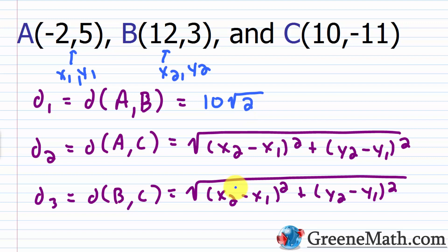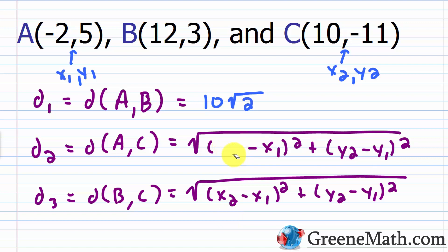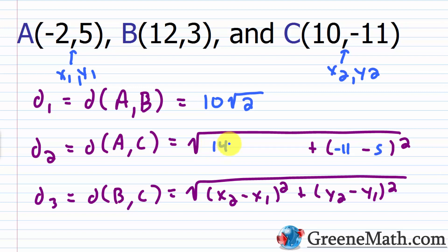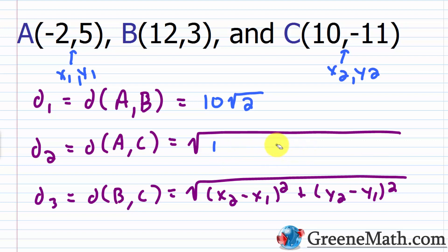Now the distance between A and C: x₂ = 10, x₁ = −2, so 10 − (−2) = 12, squared is 144. Then y₂ = −11, y₁ = 5, so −11 − 5 = −16; −16 squared is 256. Summing 144 and 256 gives 400, and the square root of 400 is 20.